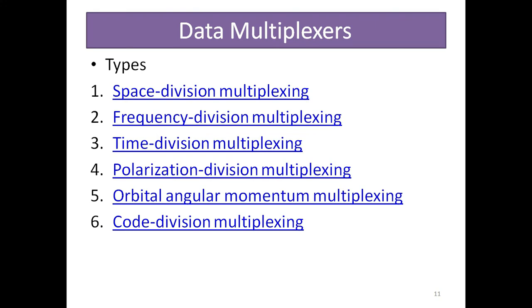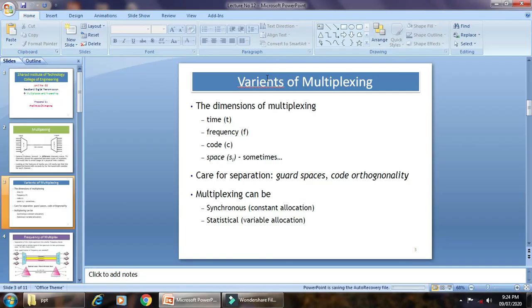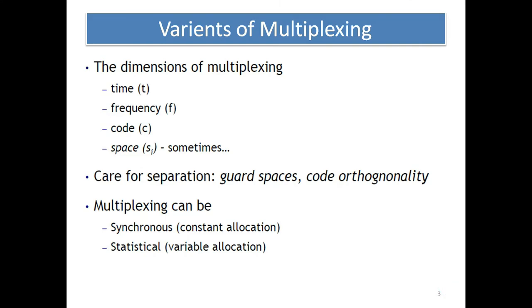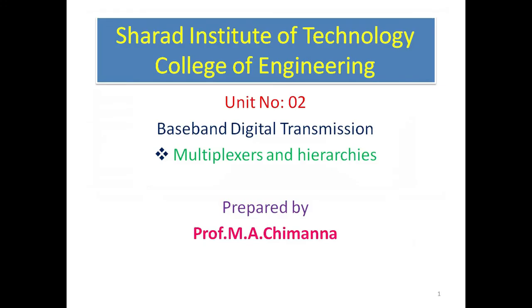Data multiplexers are divided into: space division multiplexing, frequency division multiplexing, time division multiplexing, polarization division multiplexing, orbital angular momentum multiplexing, and core division multiplexing. These are the multiplexing techniques used.